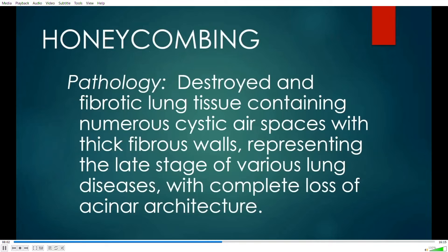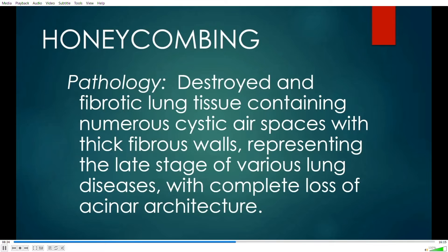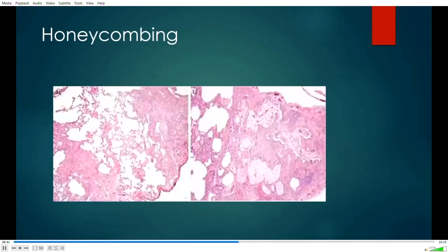Let's move on to honeycombing — a very important observation in thoracic radiology because it really defines what we call an end-stage or fibrotic lung. The pathologists have known about honeycombing for a long time and have come up with a very precise definition: destroyed and fibrotic lung tissue containing numerous air spaces with thick fibrous walls, representing the late stage of various lung diseases with complete loss of acinar architecture. Here is a pathologic example — you can see these honeycomb cysts varying in size, fairly thick-walled, surrounded by areas of very dense fibrosis.